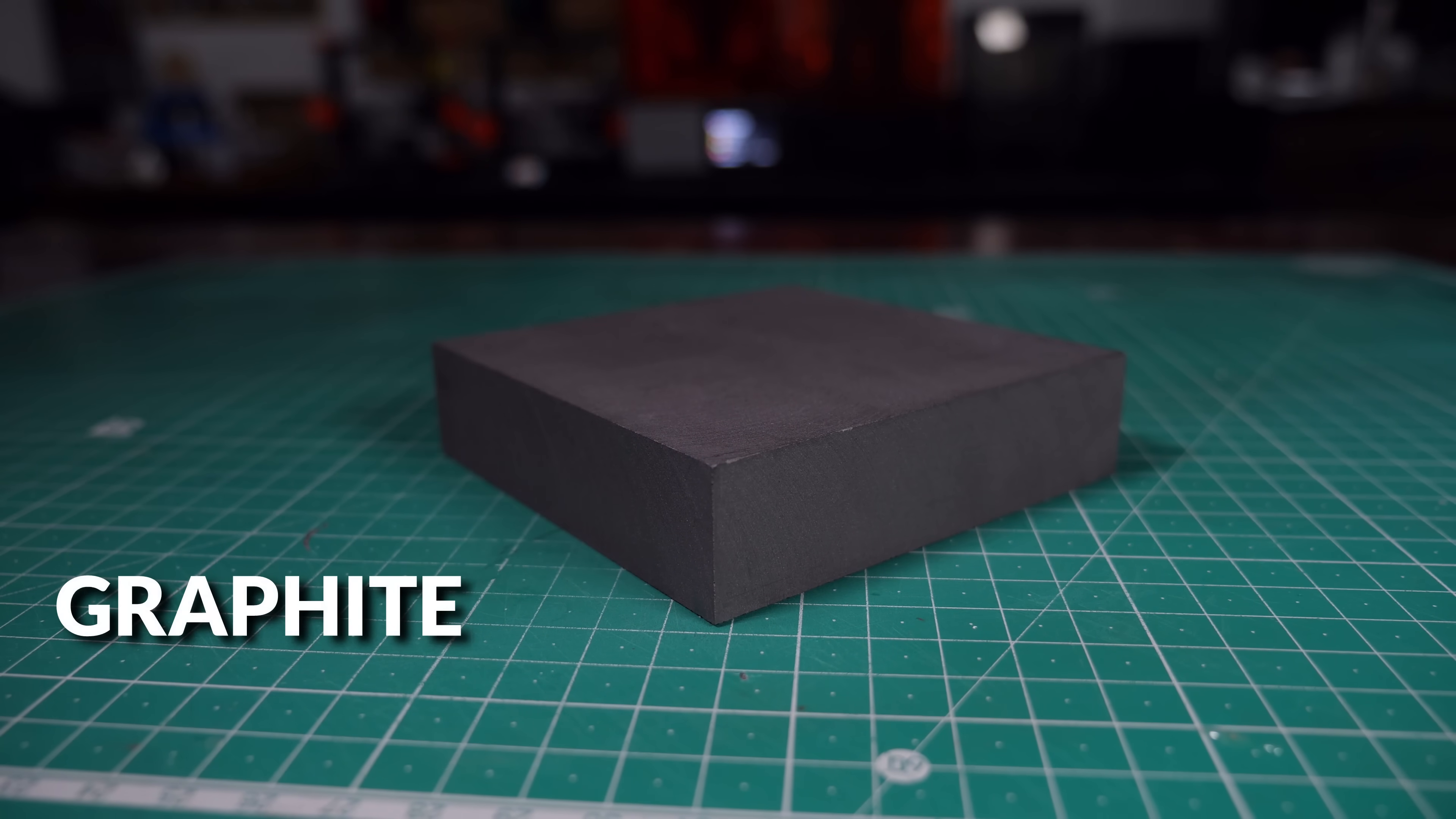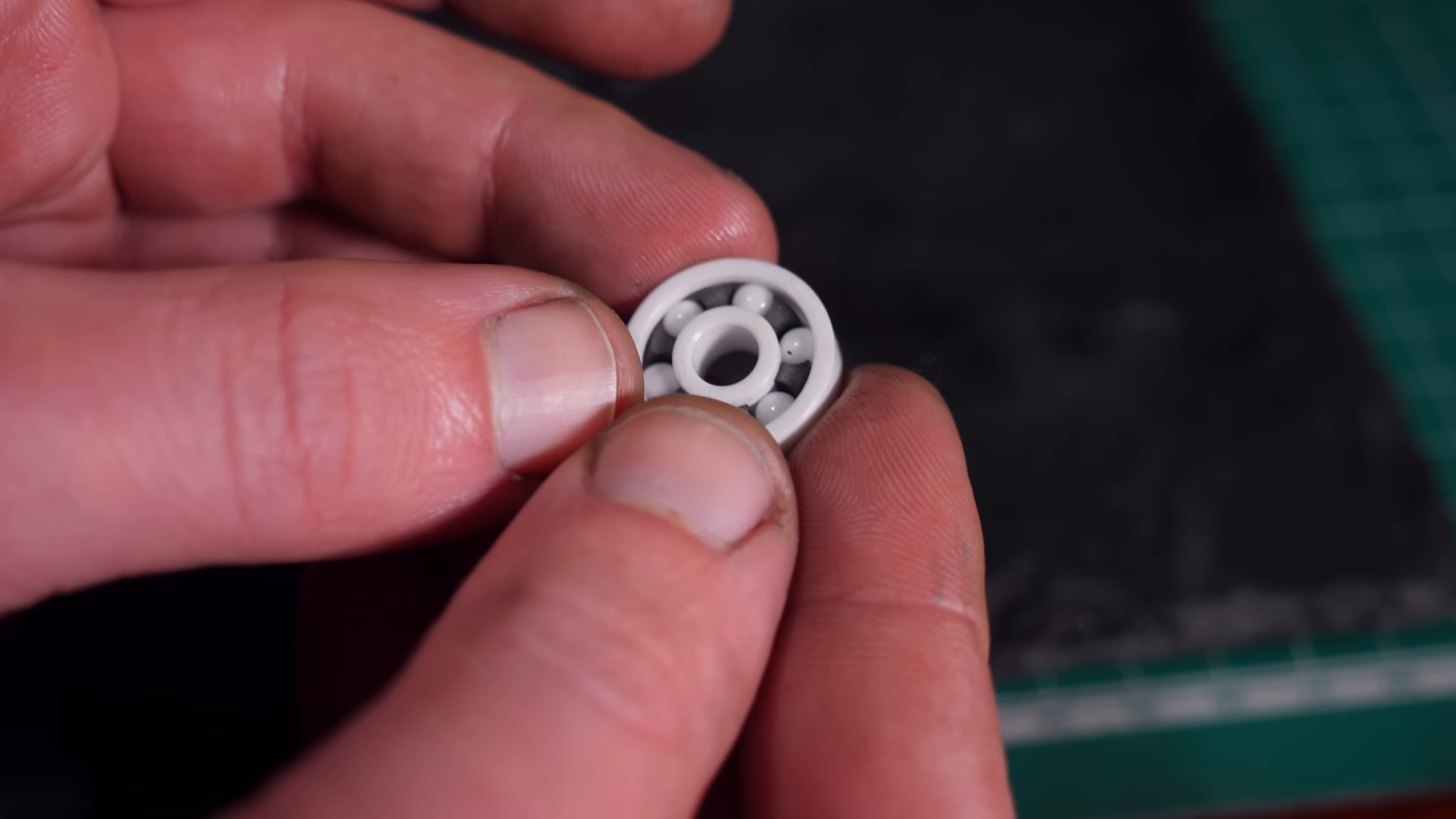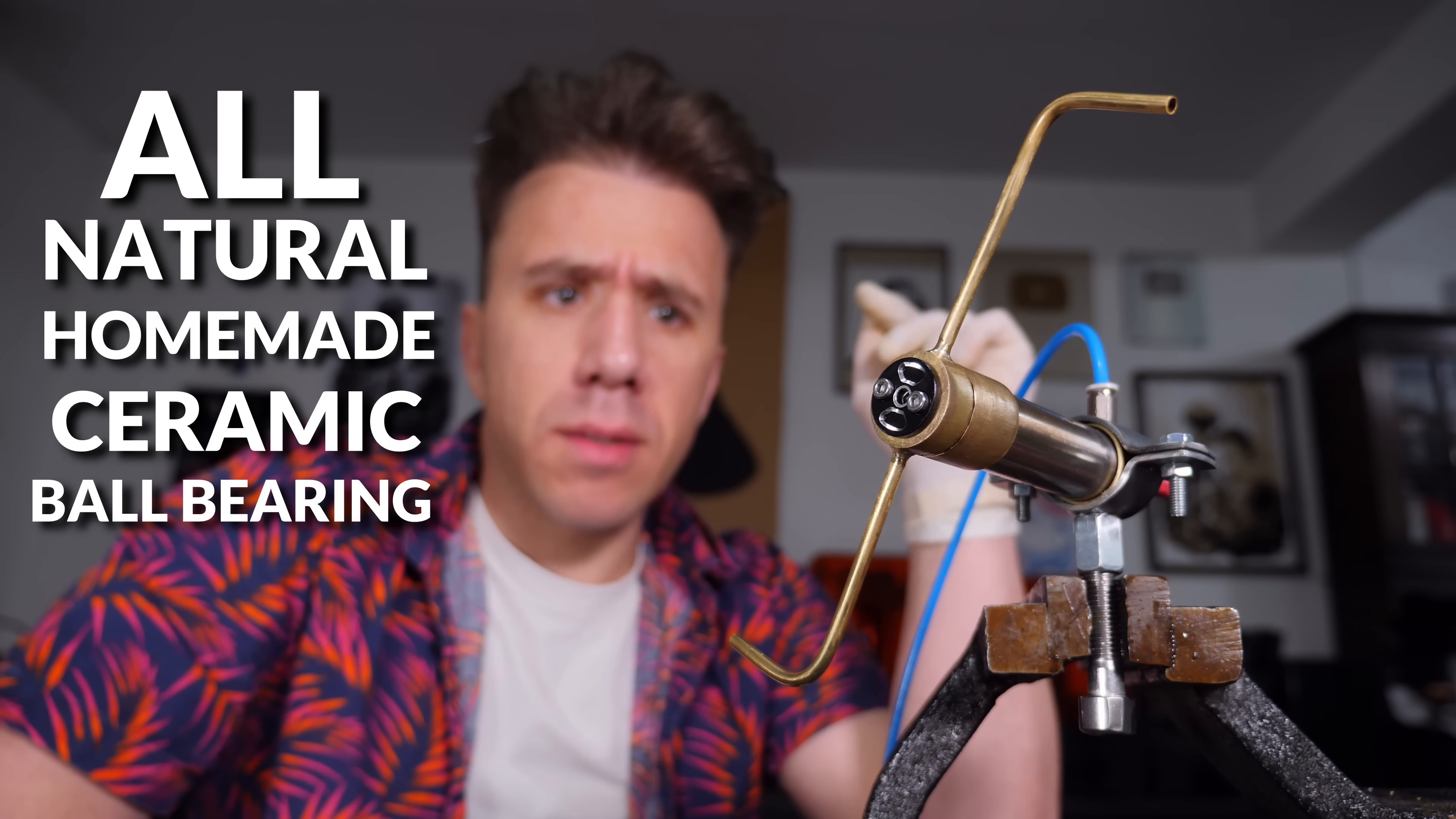This is graphite, the material pencils are made of. And besides taking heat better than Hell's Kitchen's contestants, it's also a very low friction material. So, I made a cage out of graphite. Okay, my hands are disgusting. I should probably wear gloves when I'm handling graphite. You see? An all-natural homemade ceramic ball bearing. No need for plastics or WD-40.